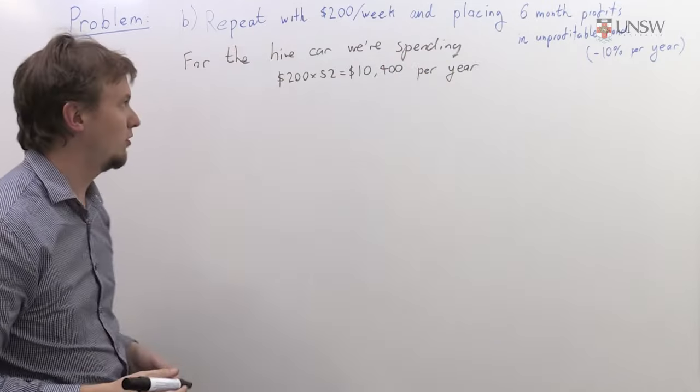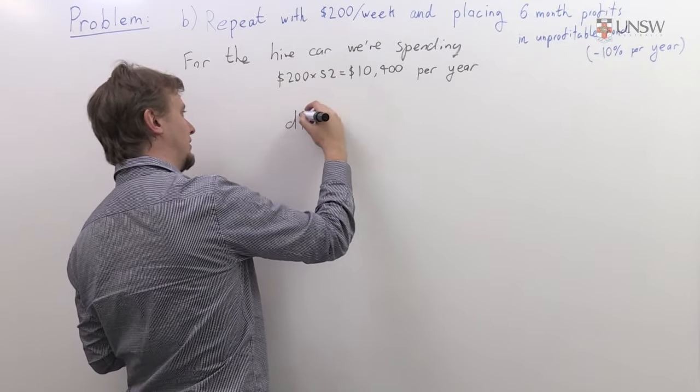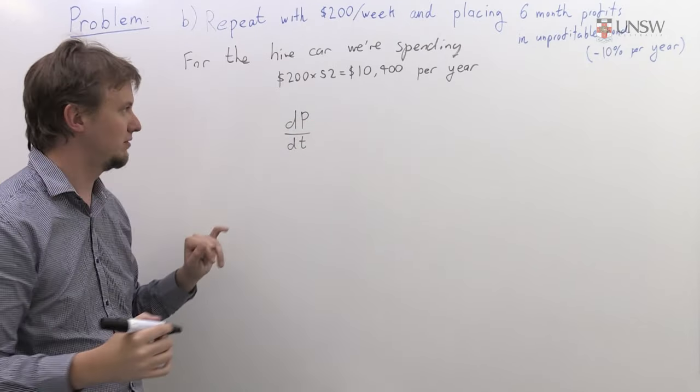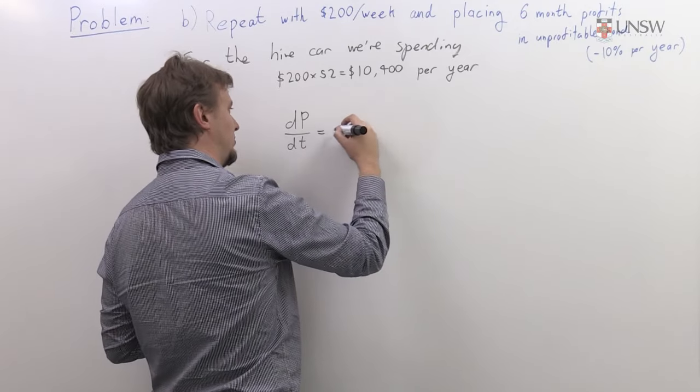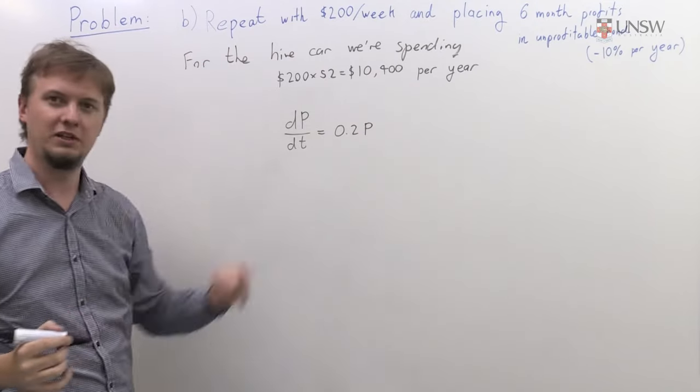We can incorporate that into the equation we had before in the following way. The rate of change of my money with respect to time is going to be equal to 20% of the amount I've left in the bond, and then I'm going to subtract off a constant $10,400 per year.